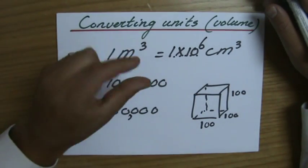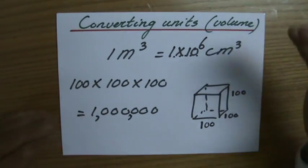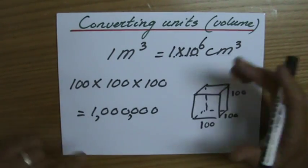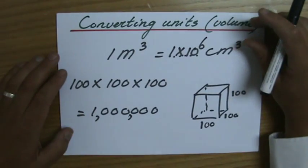A million centimeter cubes in one meter cube. Do I have to remember, oh, times by a million? Or if I go the other way around, to divide it by a million? No, don't remember those things.